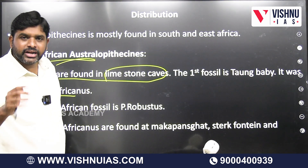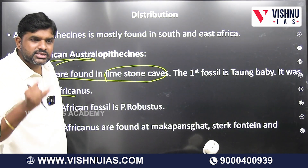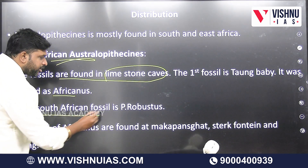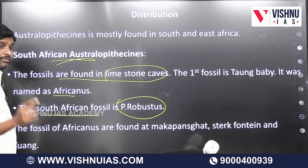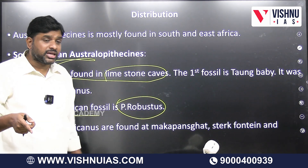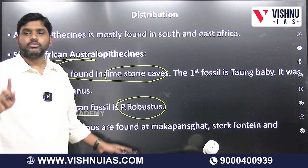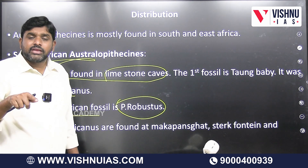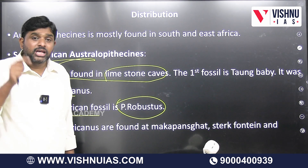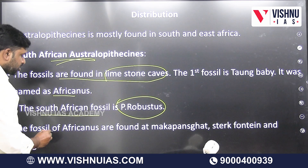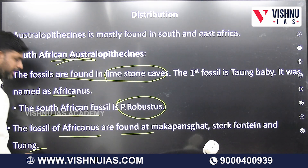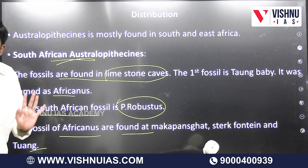We have four Gracile varieties: Africanus, Afarensis, Anamensis, and Ramidus. The first fossil, the Taung Baby, is classified as Africanus. From South Africa we also found the Robustus variety — specifically Paranthropus Robustus. The fossil sites for Africanus in South Africa are Makapansgat, Sterkfontein, and Taung.